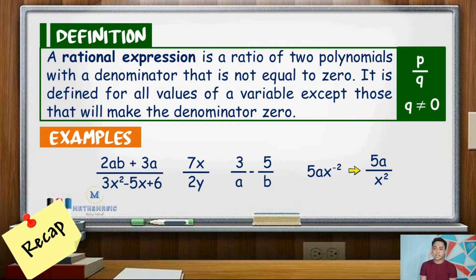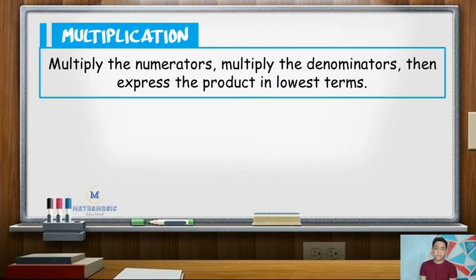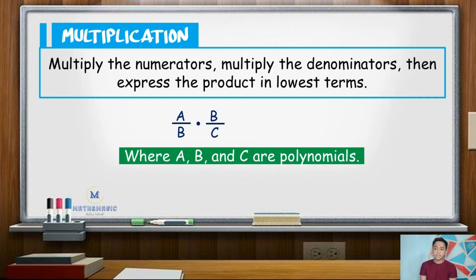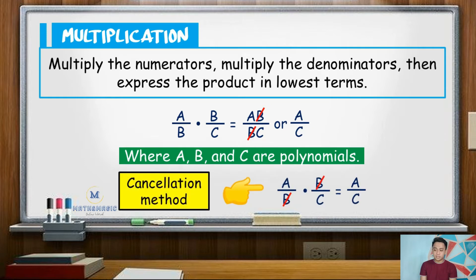In multiplying and dividing rational expressions, the same rules apply as with basic fractions. For multiplication, we will multiply numerators, multiply denominators, then express the product in lowest terms. In symbols, say A over B times B over C, where A, B, and C are polynomials. The product is given by AB for the numerator, BC for the denominator, or A over C when simplified, since B can be cancelled out. Also, it is important that you know different factoring methods, as they will be used in the simplifying phase. Moreover, the cancellation method can be used in multiplication and division of rational expressions.